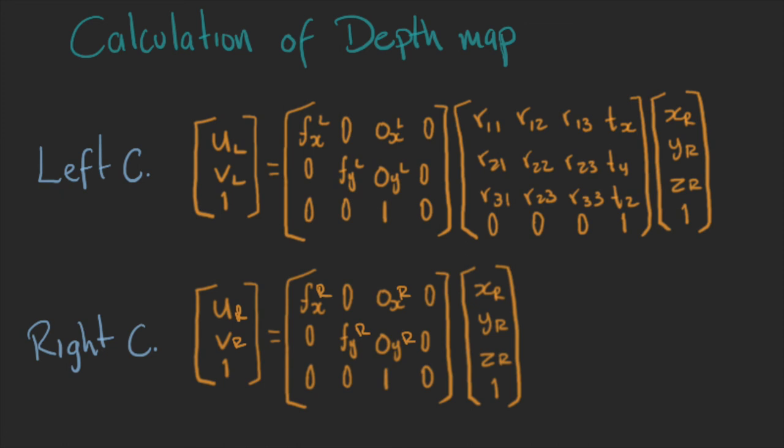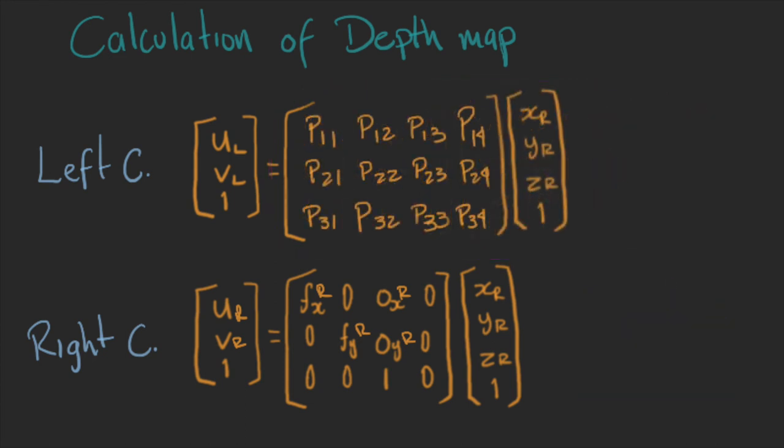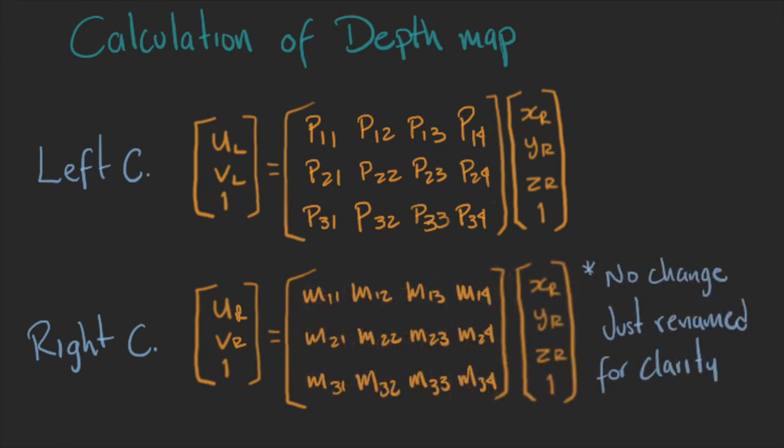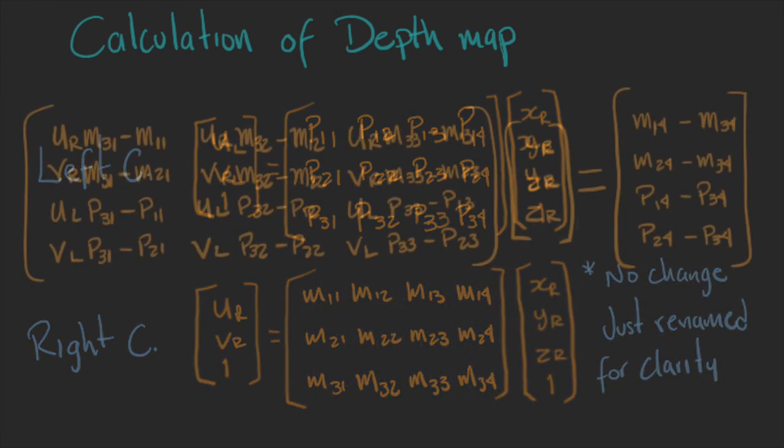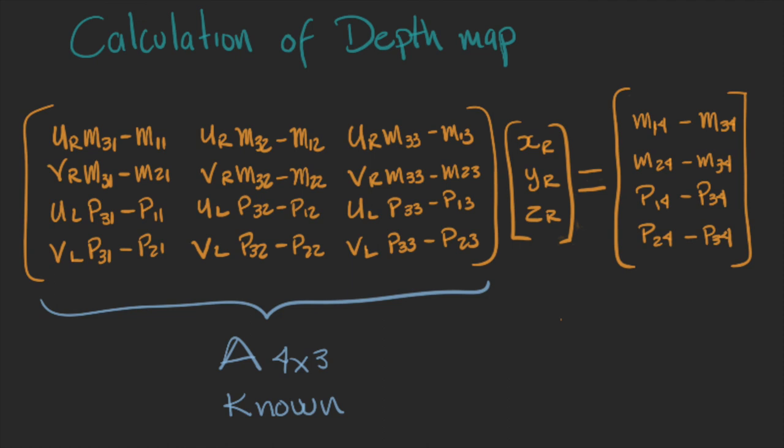The second camera equation stays the same. We can multiply the camera parameters by the translation and rotation, and we can call this the projection matrix. And we can write it, then, in a compact form. Now, this linear system can be rearranged in this way, where we have a 4x3 matrix that we know, a vector of world coordinates, and a vector of the difference between cameras.